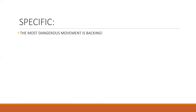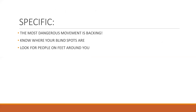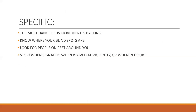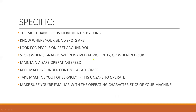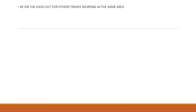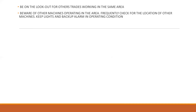The most dangerous movement is backing. Know where your blind spots are. Look for people on foot around you. Stop when signaled, or when in doubt. Maintain a safe operating speed and keep the machine under control at all times. Take the machine out of service if it is unsafe to operate. Be familiar with the operating characteristics of your machine, and be on the lookout for other workers and machines operating in the same area.